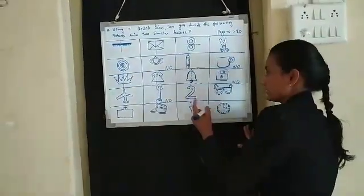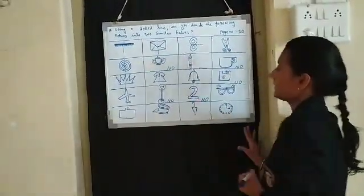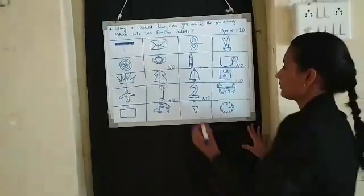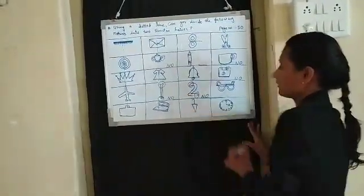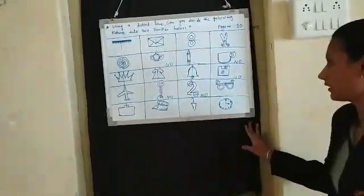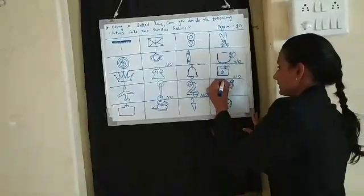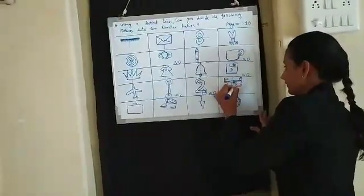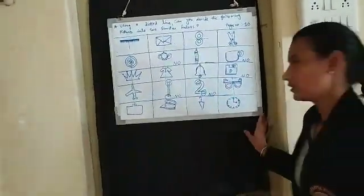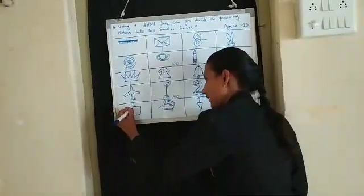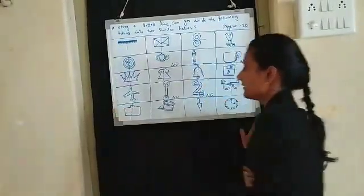Then, 2 digit — no. We cannot divide into two similar halves because here also the shape is different and here also different. Now, this goggles — yes, we can divide. Then, this suitcase also we can divide into two similar halves.